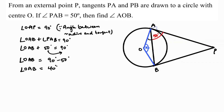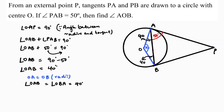Now, if you observe, angle OAB and angle OBA are equal because OA equals OB as both are radii. So angle OAB will be equal to angle OBA. Therefore this angle will be 40 and this also will be 40 degrees.